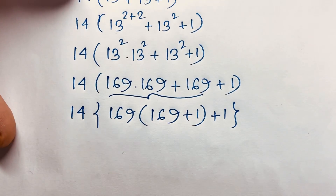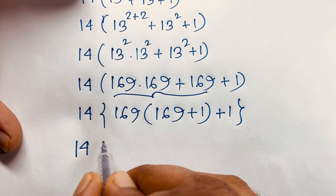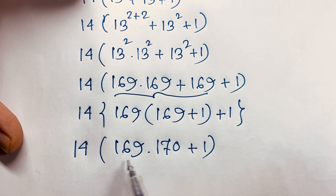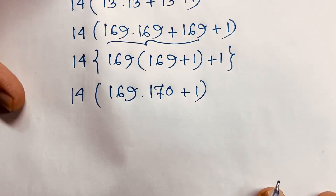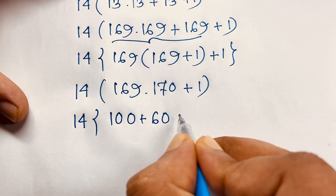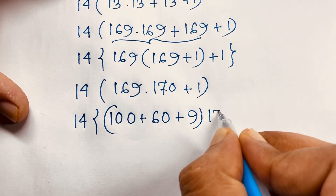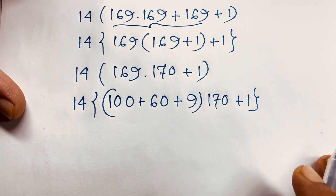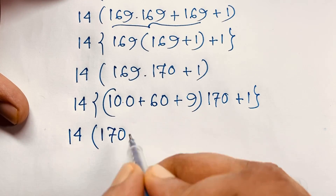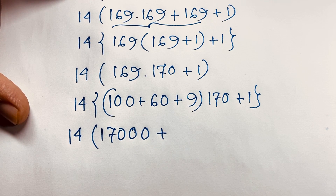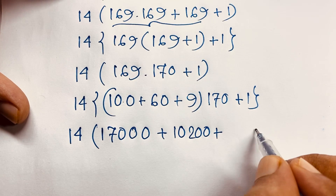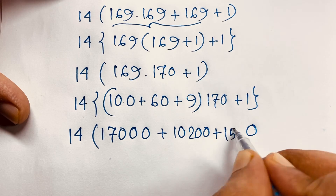Now, you can see here: 14, and this is 169 times 170. This plus this will be 170 plus 1. Now this is 14 times 169 times 170 plus 1. Here is 170, and here is 20 plus, and this is 60. 60 times 170 will be 10200, and 9 times 1 will be 0. Then 17 times 9 will be 153. And here is plus 1.